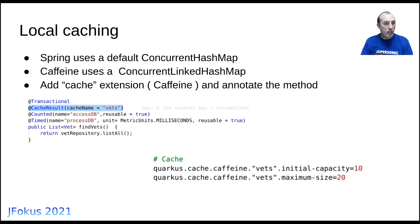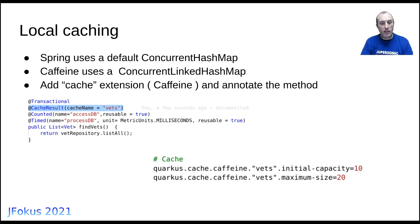For local caching, it's a matter of adding the Cache extension and using the @CacheResult annotation. It's very similar to the Spring equivalent with slight differences. You then specify behavior in the properties file, setting the initial capacity or maximum size for each cache.